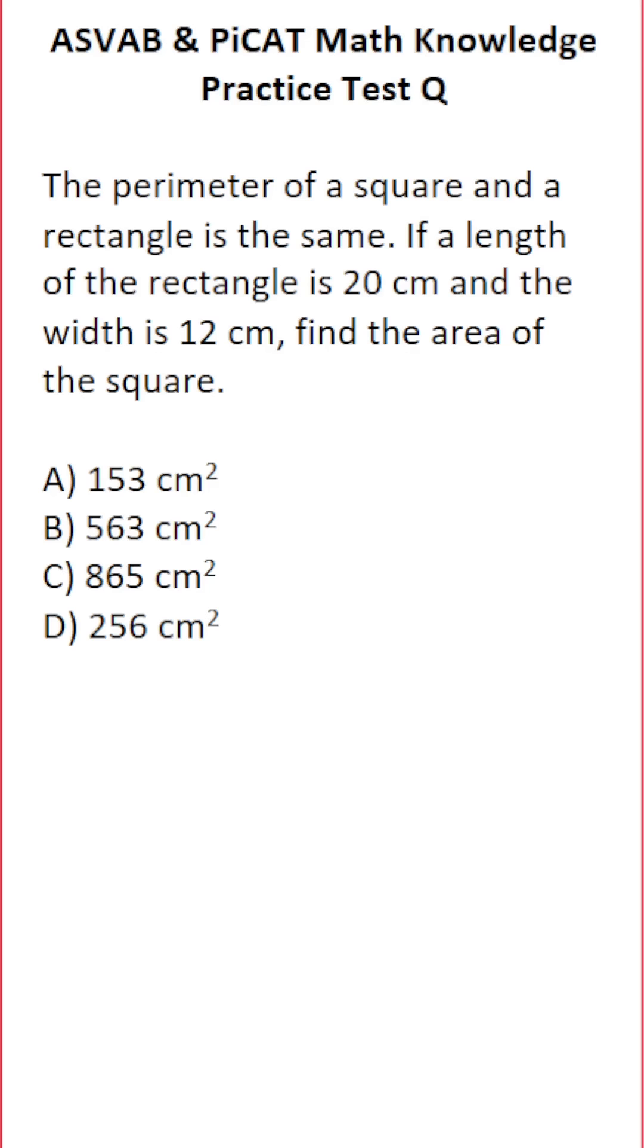This math knowledge practice test question for the ASVAB and PICAT says the perimeter of a square and a rectangle is the same. If the length of the rectangle is 20 centimeters and the width is 12 centimeters, find the area of the square.